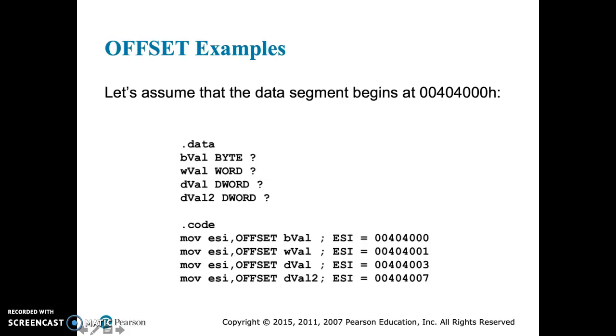And then we reference those four variables by their offset and we're moving it into the ESI register. So BVAL, its offset is 0, because it's the first one. WVAL, its offset is essentially how much space is taken up by BVAL, which is 8-bits. So its offset is 1.